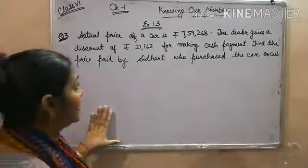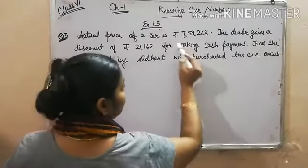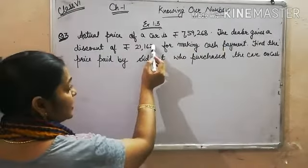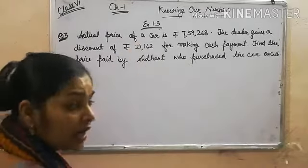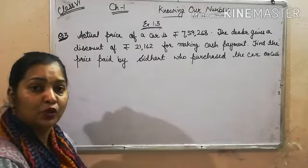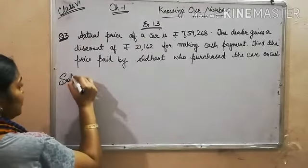Same we have to do in this problem. The actual price of the car was this, discount given was this, and the total price paid by Siddhant will be the difference of these two numbers. So let's do the solution.